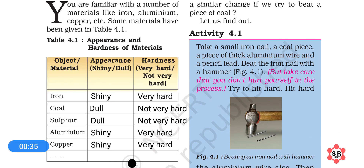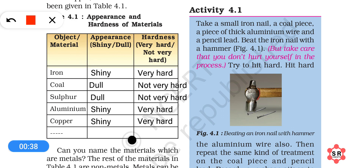Suppose we collect some materials like iron, coal, sulphur, aluminium, and copper. We will see that they have differences in their properties. For example, if we talk about appearance, iron, aluminium, and copper have a shiny appearance. In the same way, iron, aluminium, and copper are very hard in nature.